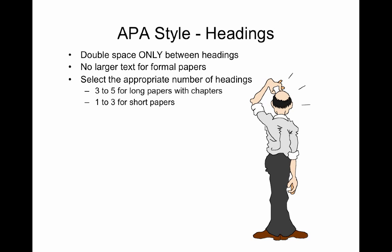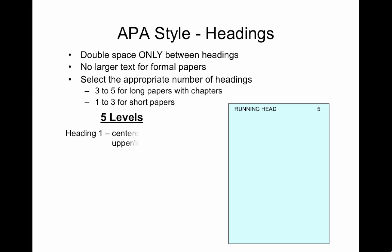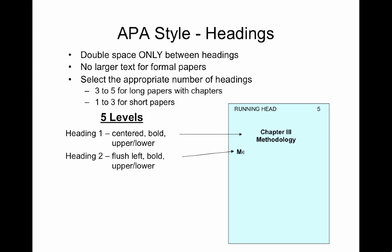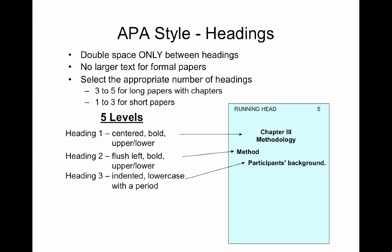This is what it looks like with five levels. Your first heading is centered, bold, and upper and lower case. Heading 2 is flush left, bold, with upper and lower case. Heading 3 is indented, lower case with a period. Heading 4 is indented, bold, lower with a period. And heading 5 is indented, italics, and lower with a period.